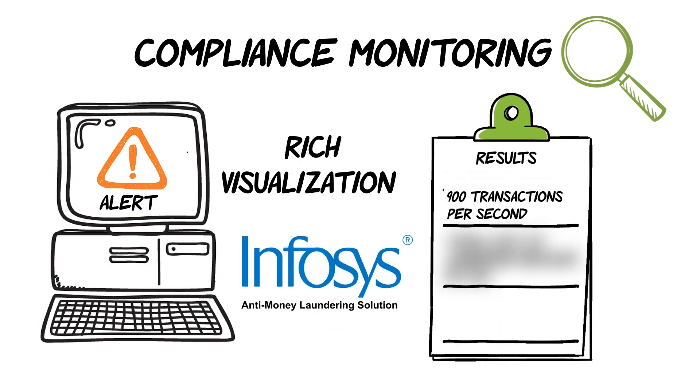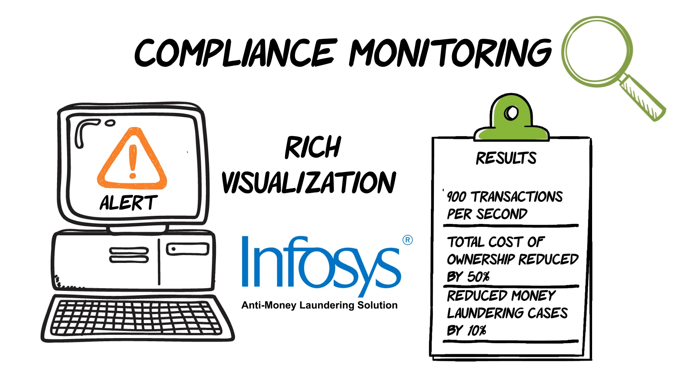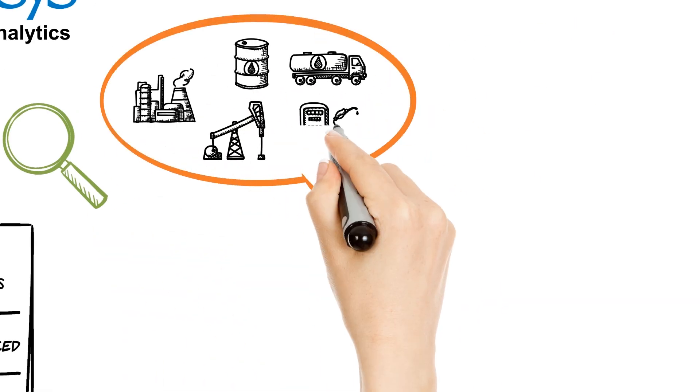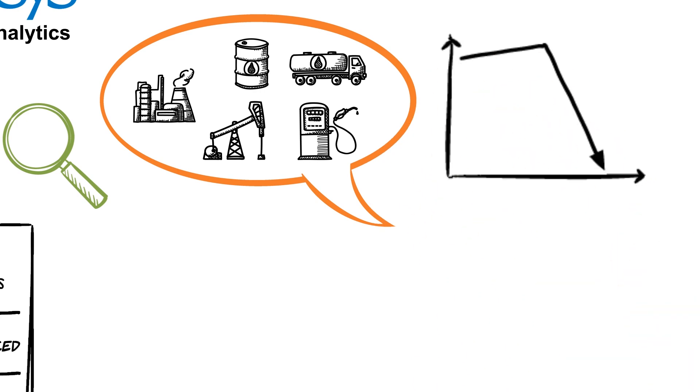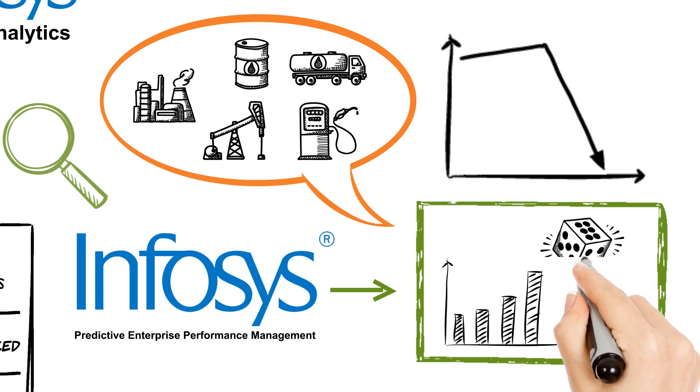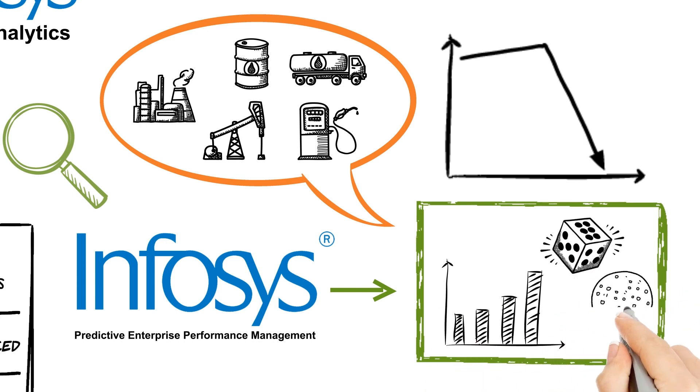And then there was the case of the gas utility company grappling with operational efficiency. With the help of Infosys Predictive EPM, they put in place processes such as demand forecasting, clear risk evaluations, and predictive planning and operations to make their operations efficient.